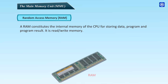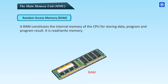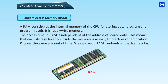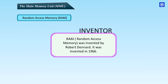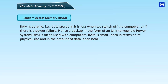Random Access Memory (RAM): A RAM constitutes the internal memory of the CPU for storing data, programs, and program results. It is read-write memory. The access time in RAM is independent of the address of stored data, meaning each storage location inside the memory is as easy to reach as any other and takes the same amount of time. We can reach RAM randomly and extremely fast. RAM was invented by Robert Dennard in 1966. RAM is volatile — data stored in it is lost when we switch off the computer or if there is a power failure. Hence, a backup in the form of an uninterruptible power system (UPS) is often used with computers. RAM is small, both in terms of its physical size and the amount of data it can hold.